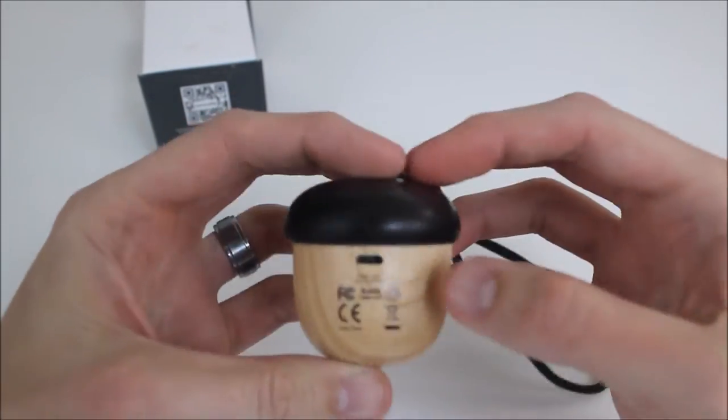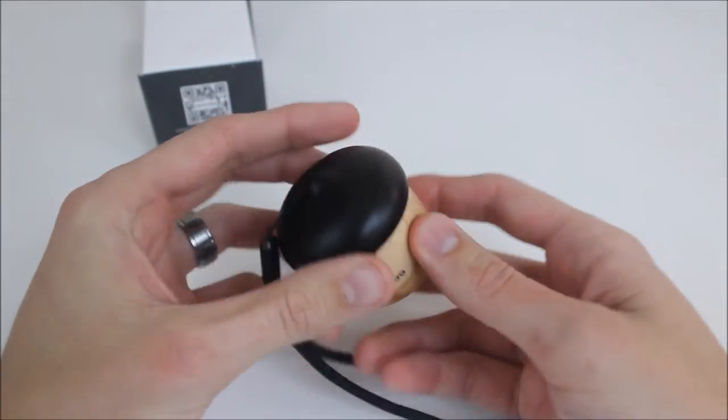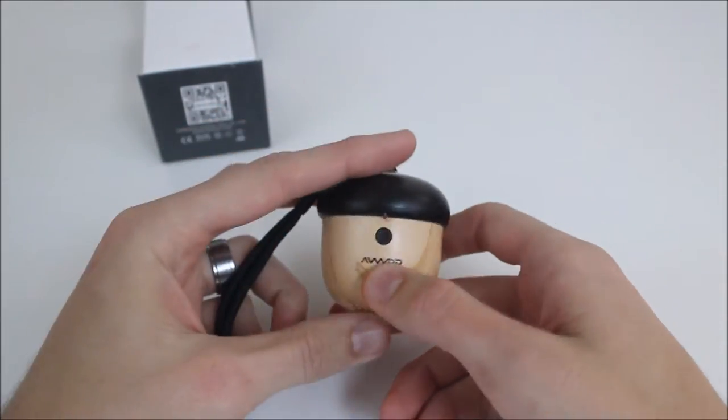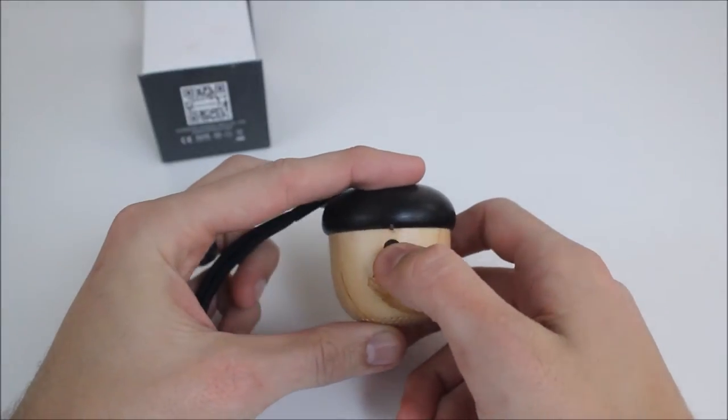On the back here you have your micro USB charging port. You have the speaker on the bottom. You have the wooden acorn cap and then here you have your power button as well as an LED indicator.